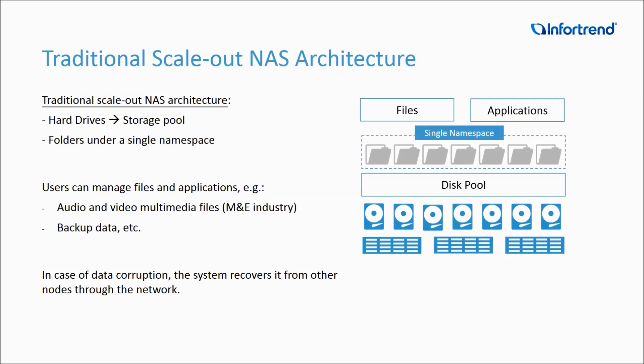Let's take a look at the traditional scale-out NAS architecture. As you can see from this figure, it is composed of hard drives of multiple nodes into a storage pool, and folders are combined in the storage pool under a single namespace so that users can store and easily access a large number of files such as multimedia files or backup data. When a traditional architecture encounters data corruption, the system will recover and reconstruct the damaged data by copying the data to different nodes, and the data copied from each node will be transmitted to a damaged node through a network for data recovery.